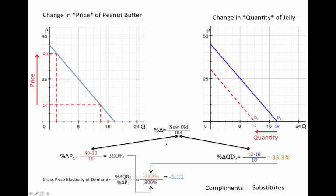Which gives us on this side, the price side, 300 percent. And then on the quantity demanded side, it's minus 33.3. And both of these equation answers feed down into this equation here, which equals negative 1.11.